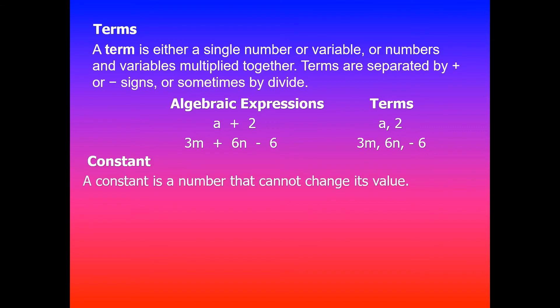Constant is a number that cannot change its value, so it's a fixed number. For example, a plus 2 where 2 is a constant and a is a variable. 3m plus 6n take away 6, so in this case, take away 6 is a constant.